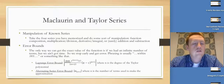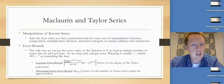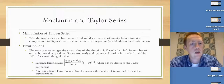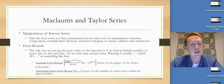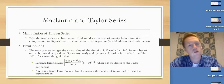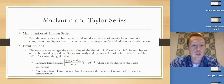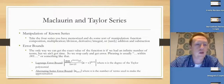Let's look at Maclaurin and Taylor series. First idea: manipulate some known series. Remember, there are four to memorize: e to the x, sine of x, cosine of x, and 1 over 1 minus x. What you're going to do is take those and apply a function composition, multiplication, division, derivative, integral, or sometimes addition and subtraction — just do something to the one you already know to get the one they're looking for.